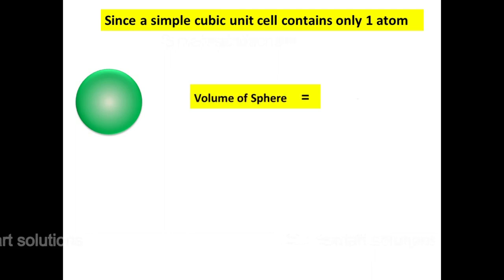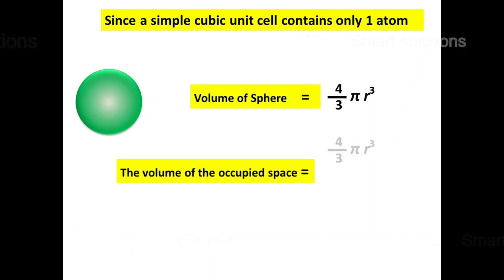The volume of the sphere is equal to 4 by 3 pi r cubed. So the total volume of the occupied space is equal to 4 by 3 pi r cubed.